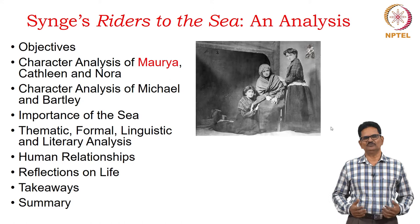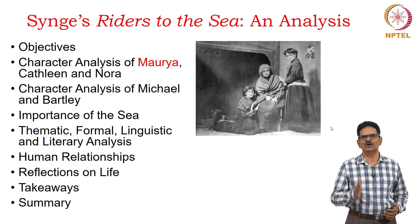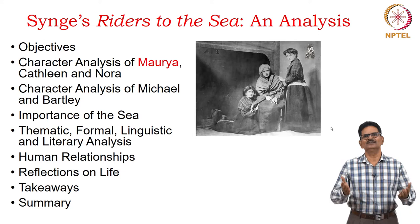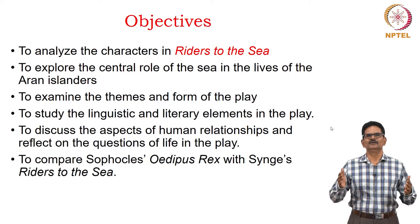The picture we have here is that of Maurya, Kathleen and Nora. We can find some other pictures like this. I thought I should give you at least one picture of Maurya. This was the performance we have had in some place. Let's see the objectives now: to analyze the characters in Riders to the Sea, a one-act play.